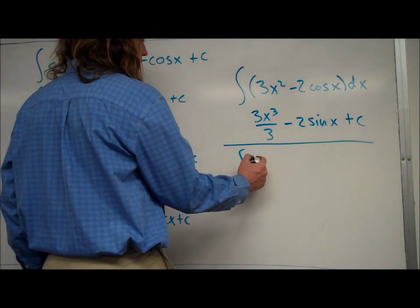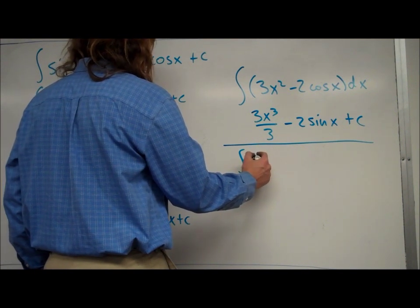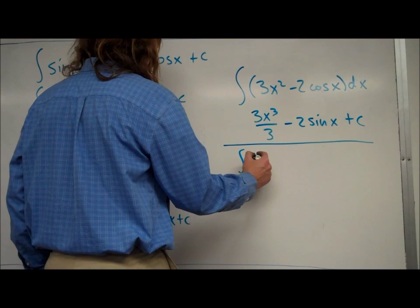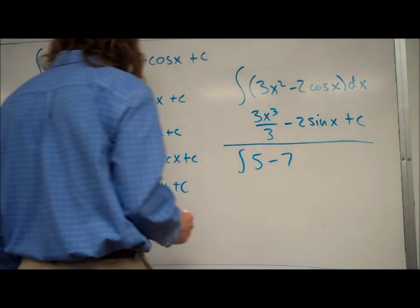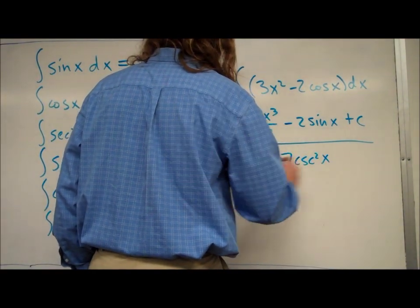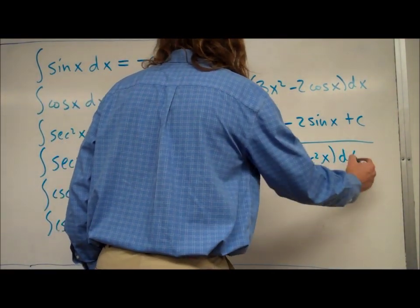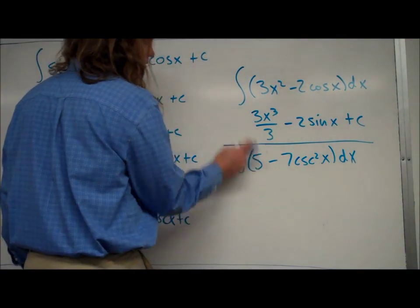Let's say we had the integral of 5 minus 7 cosecant squared of x dx. You just look at the antiderivative of each individual term, just like that one.